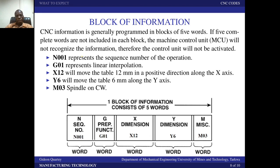In CNC, information is generally programmed in blocks of five words. If five complete words are not included in each block, the machine control unit will not recognize the information and therefore the control unit will not be activated. Each line of coding is called a block, and each block should contain the required information.